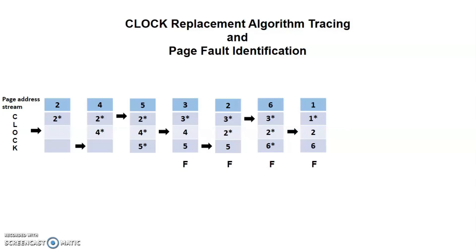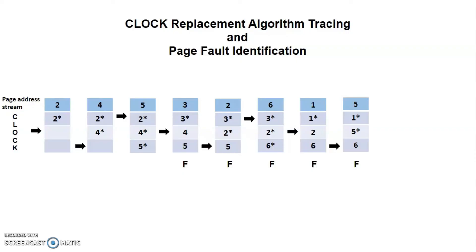The pointer is now at the second frame. Since there is a 0 use bit here, the next page can simply enter and now the frame has 1 use bit. The pointer will then move to the next frame and a page fault occurred here. The third frame also has a 0 use bit, allowing page 6 to enter the frame. The pointer does not move to the next frame because the page is in the allocated frame. So there is no page fault here. However, the use bit is now set to 1, as usual.